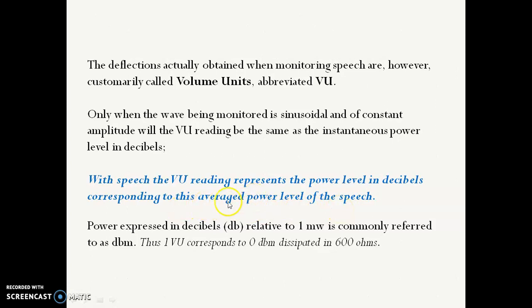Obviously this shows only the average power, but it will show the reading as instantaneous power only if the monitored signal is sinusoidal and of constant amplitude. Then the VU reading can be told to be same as the instantaneous power level in decibels.